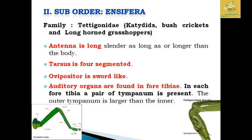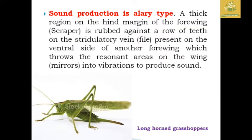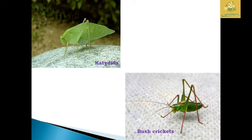In the suborder Ensifera, the family Tettigoniidae comprises katydids, bush crickets, and long-horned grasshoppers. The antennae are long and the tarsus is four-segmented, while in Acrididae it is three-segmented. The ovipositor is sword-like. Auditory organs are found on the fore tibia, which bears a pair of tympana — the outer one larger than the inner. Sound is produced by the alary type mechanism: the hind margin of the forewing is rubbed against a row of teeth (stridulatory file) on the ventral side of the other forewing, causing resonant vibration.